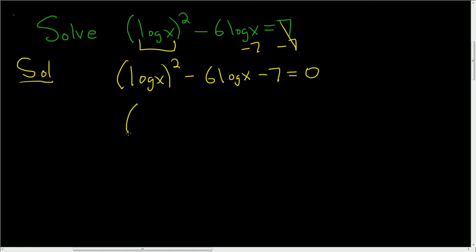This should factor. Let's try. It should factor like this: log x, log x, and over here we have 0. Why like this? Because if you multiply log x times log x, you get this term here.